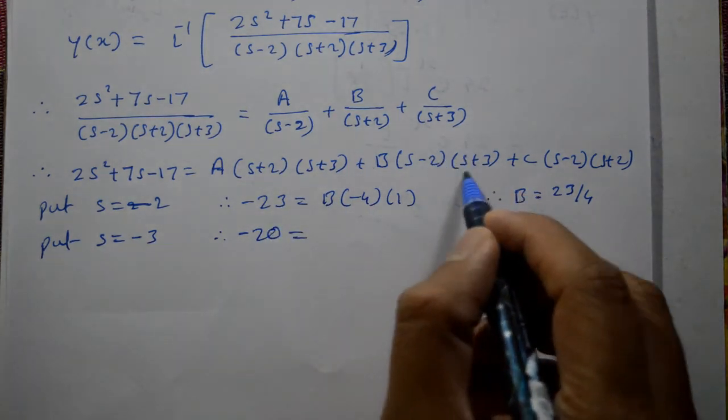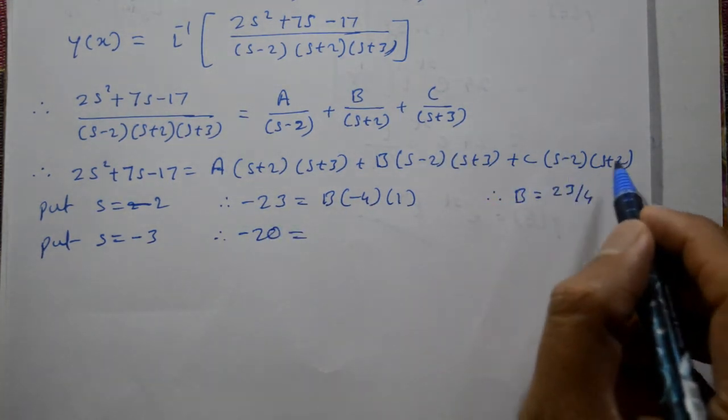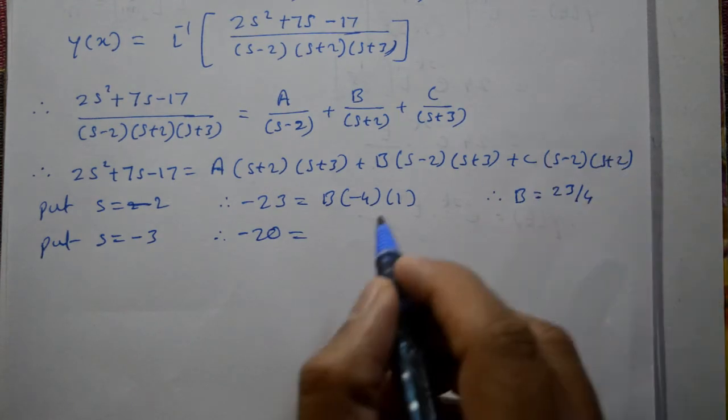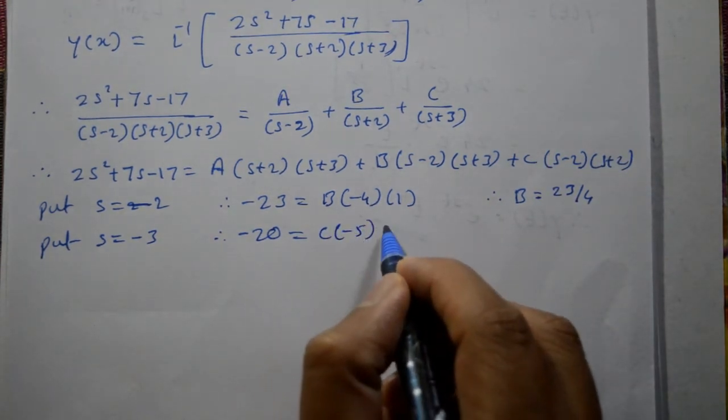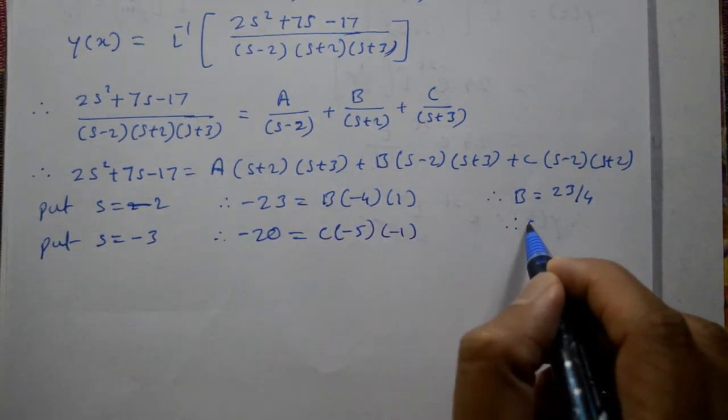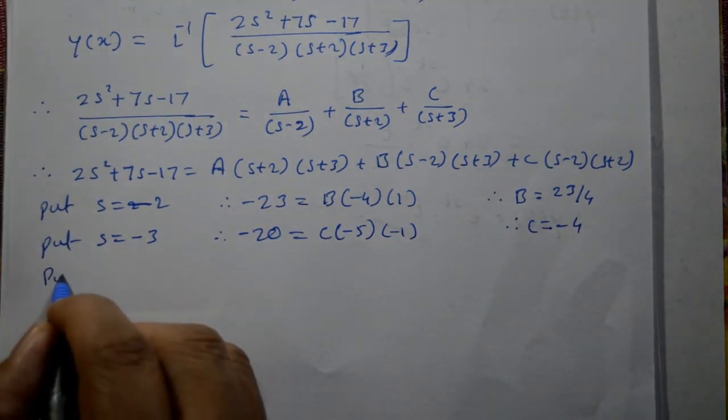Next s plus 3 is equal to zero or s is equal to minus 3. Put s equals minus 3: minus 3 square is 9, 7 into minus 3 is minus 21, minus 17 gives minus 20. Left hand side is minus 20. s equals minus 3 makes this zero, this zero, gives c into minus 5 into minus 1. Therefore c is equal to minus 4.